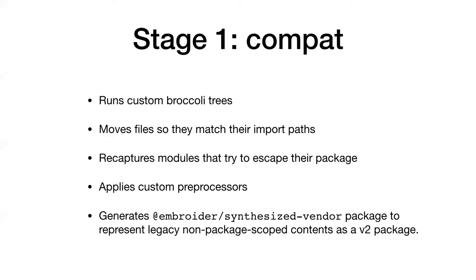In stage one we run any custom Broccoli stuff, then we move all the files around so that their actual paths on disk match what you would import. Today there are a lot of different conventions for how Ember add-on files become paths you'd import with a module specifier — here we do the moving around so they actually match. We also recapture modules that try to escape their package. An example is that in every Ember app out of the box, you install ember-qunit but then you can import things from QUnit directly — it's convenient, but confusing. It is always bad manners to have your package pretend to be somebody else's package.